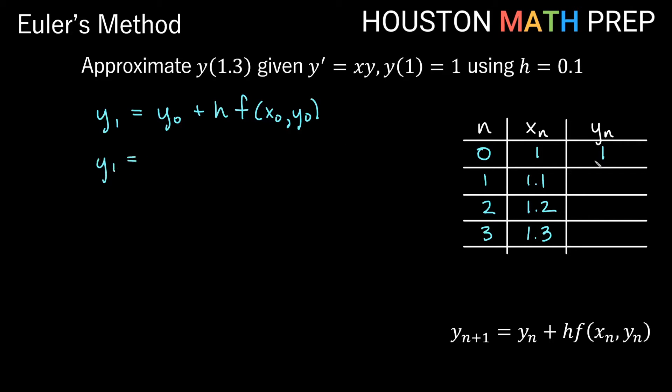So that tells us y1 equals y0, which was 1, plus h, we know h is 0.1, so 0.1, times, and now f of x0, y0 says take your formula for your y prime and just plug in your x0 and y0 values, right? So our formula says take x times y and plug in the x0 and y0 values for x and y. Well our x0 is 1 and our y0 is 1, so this is actually just 1 times 1. And now we can go ahead and simplify and get our y1. So here our y1 will be 1 plus 0.1 times what's in here. What's in here is just 1, so we'll have 1 plus 0.1 and that gives us 1.1.